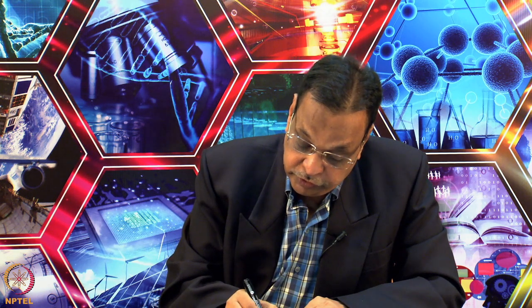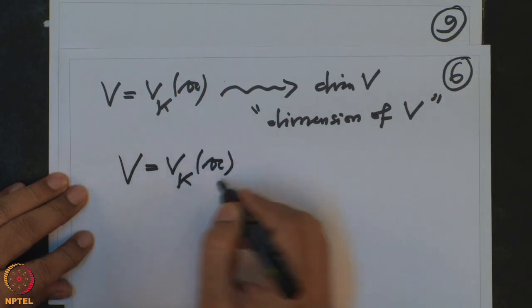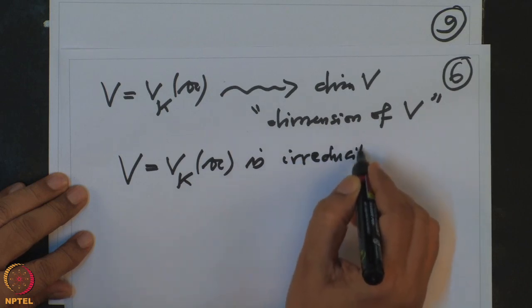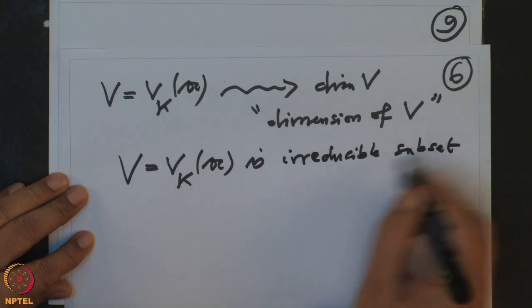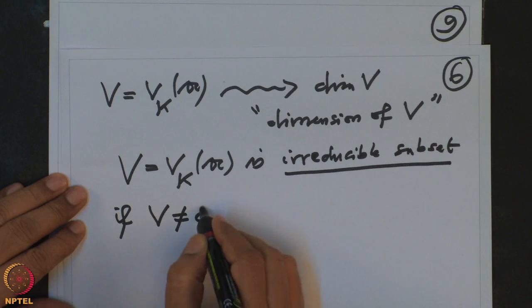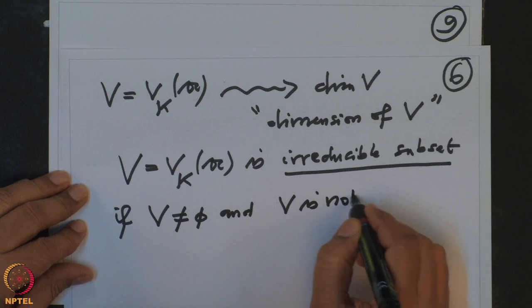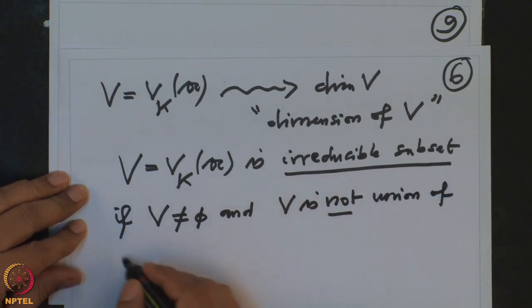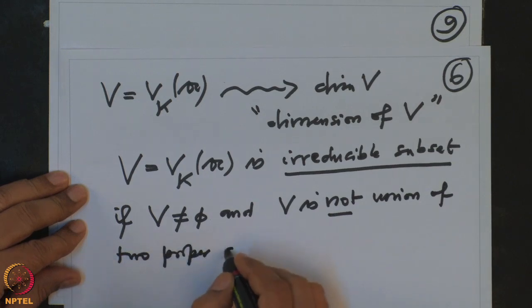Now I want to attach a number to the algebraic set and call it a dimension. Before that, let me define when an algebraic set V is called irreducible: V is irreducible if V is non-empty and V cannot be written as the union of two proper algebraic subsets.